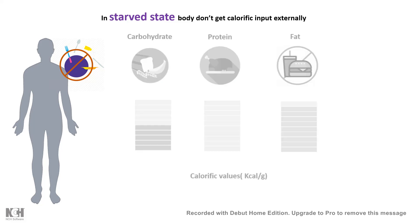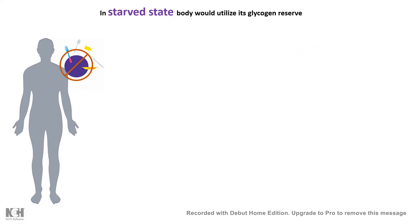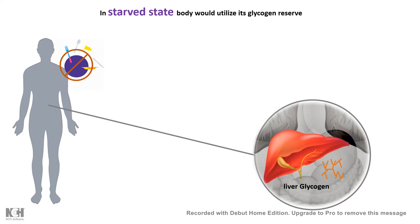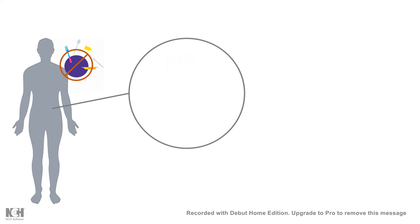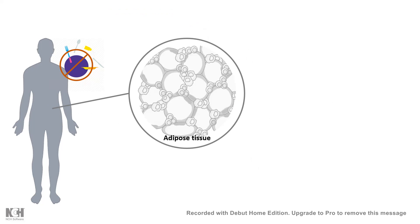Imagine a starved state where all external calorific input or food intake is down. The body has to rely on its own reserved sources to make energy. First the body would use all its glycogen reserves — the main glycogen reserves are in the liver and in muscle. They break down glycogen by glycogenolysis and utilize the glucose to generate energy for the first few phases. But eventually when the glycogen reserves are gone and protein reserves are gone, it has to use other sources.